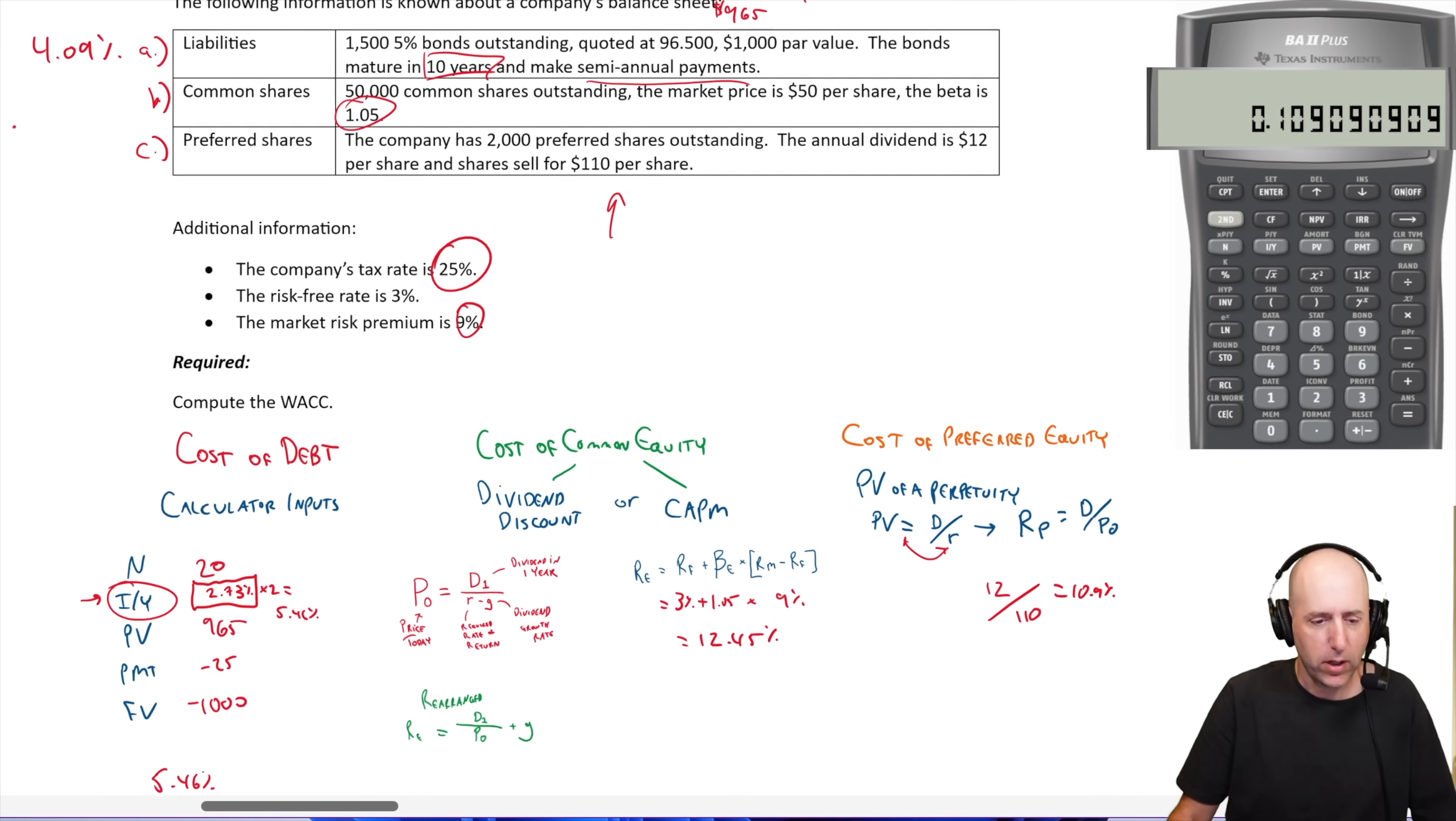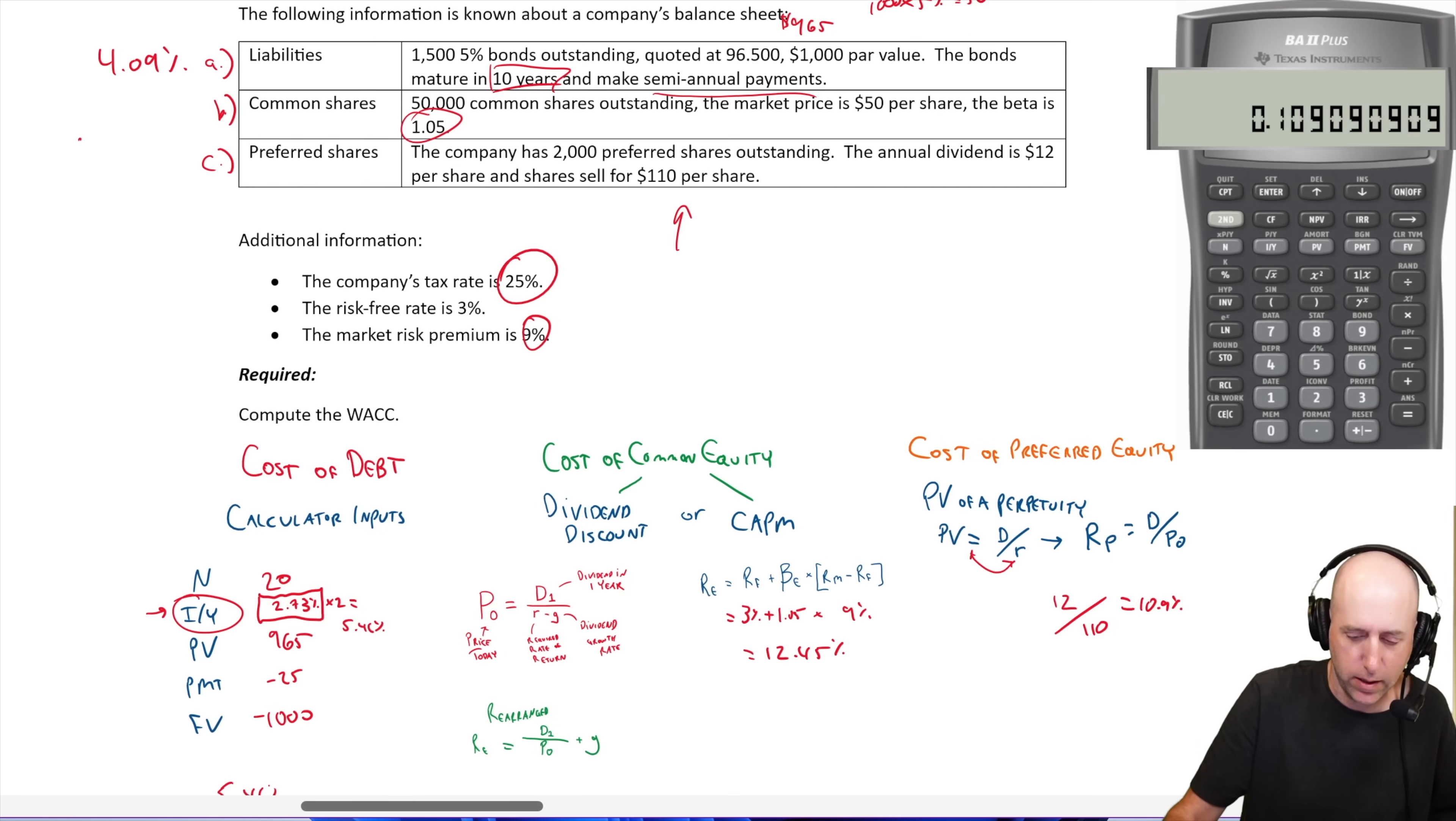Okay. So we have our costs, our cost of equity, 12.45%. Our cost of preferred equity or cost of common equity, 12.45%. Their cost of preferred equity, 10.9%. We're good to go.